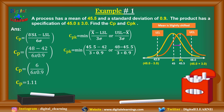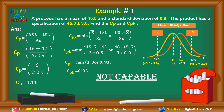For cpk, we calculate the minimum of: (45.5 − 42) / (3 × 0.9) = 3.5 / 2.7 = 1.30, or (48 − 45.5) / (3 × 0.9) = 2.5 / 2.7 = 0.93. The minimum is 0.93, so cpk = 0.93. This means the process is shifted towards one side and is not capable. For a process to be capable, both cp and cpk must be greater than 1. Even though cp is greater than 1, cpk is less than 1, so the process is not capable. However, by adjusting the mean, the process can become capable.